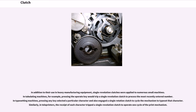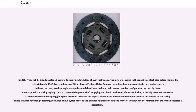Single revolution clutches were applied to numerous small machines. In tabulating machines, pressing the operate key would trip a single revolution clutch to process the most recently entered number. In typesetting machines, pressing any key selected a character and engaged a single rotation clutch to cycle the mechanism and typeset that character. Similarly, in teleprinters, the receipt of each character tripped a single revolution clutch to operate one cycle of the print mechanism. In 1928, Frederick G. Creed developed a single-turn spring clutch that was particularly well suited to the repetitive start-stop action required in teleprinters.